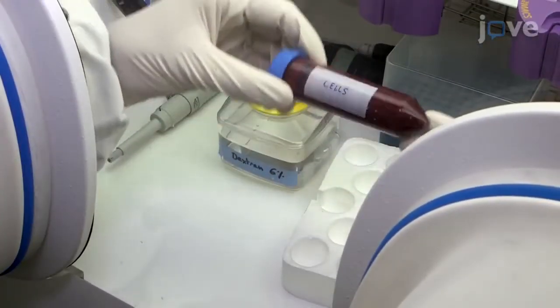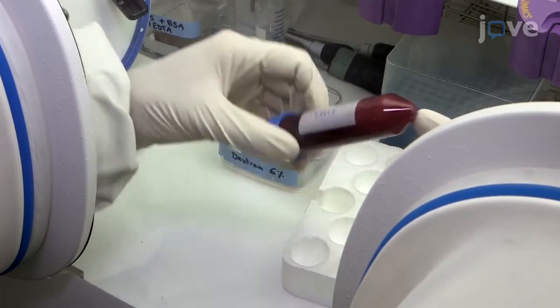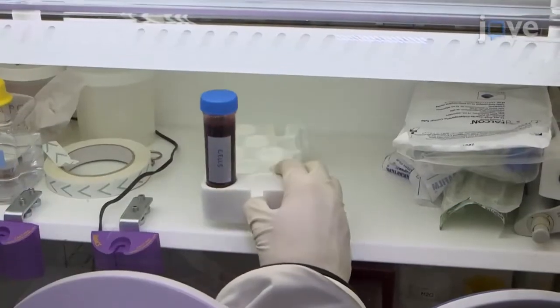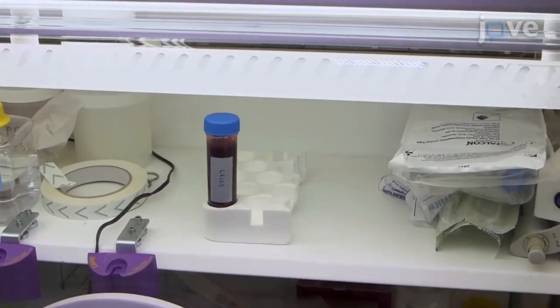Invert the tube 10 to 20 times to gently mix the blood and dextran mixture, and allow the tube to sediment for at least 30 minutes.